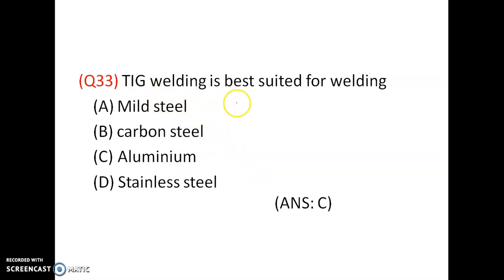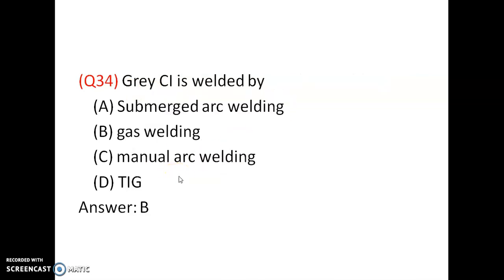TIG welding is best suited for welding — mild steel, carbon steel, aluminium, stainless steel. It is best suited for welding aluminium. Grey cast iron is welded by — submerged arc welding, gas welding, manual arc welding, TIG welding. It is welded by gas welding — ordinary oxyacetylene gas welding. Option B is correct.